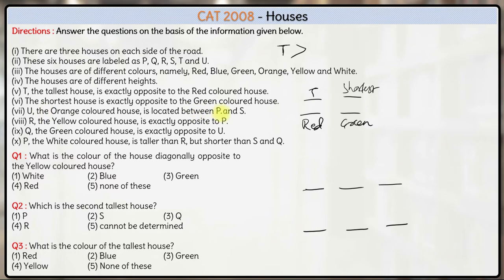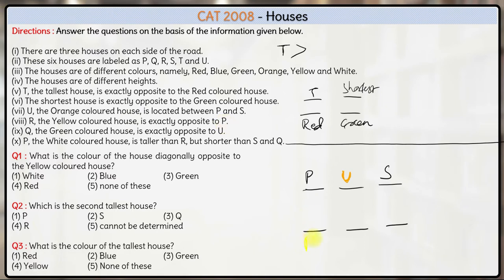U, the orange coloured house, is located between P and S. So we'll have P or S on either side — S can be on the left side and P on the right side also, so that will be a second case. U is the orange coloured house; we don't know the colours of P and S yet. Next, R the yellow coloured house is exactly opposite to P. Next, Q the green coloured house is exactly opposite to U.